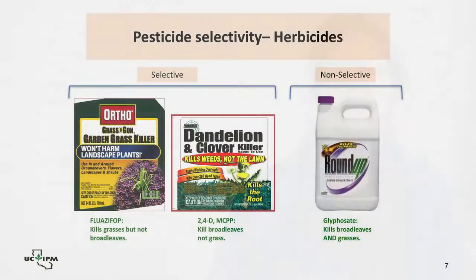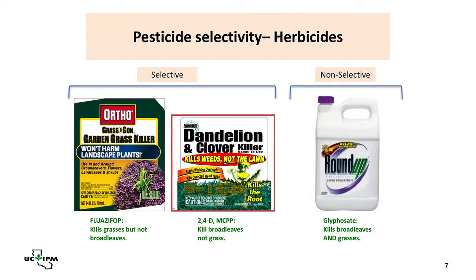With herbicides, selectivity is also an issue. There are selective herbicides that kill grasses but not broadleaves — useful in planting beds. There are selective herbicides that kill broadleaf plants but not grasses — used in lawns. And there are non-selective herbicides. The most commonly used in gardens is glyphosate (Roundup, among many trade names), which will kill or injure almost every kind of plant it contacts. It is non-selective.